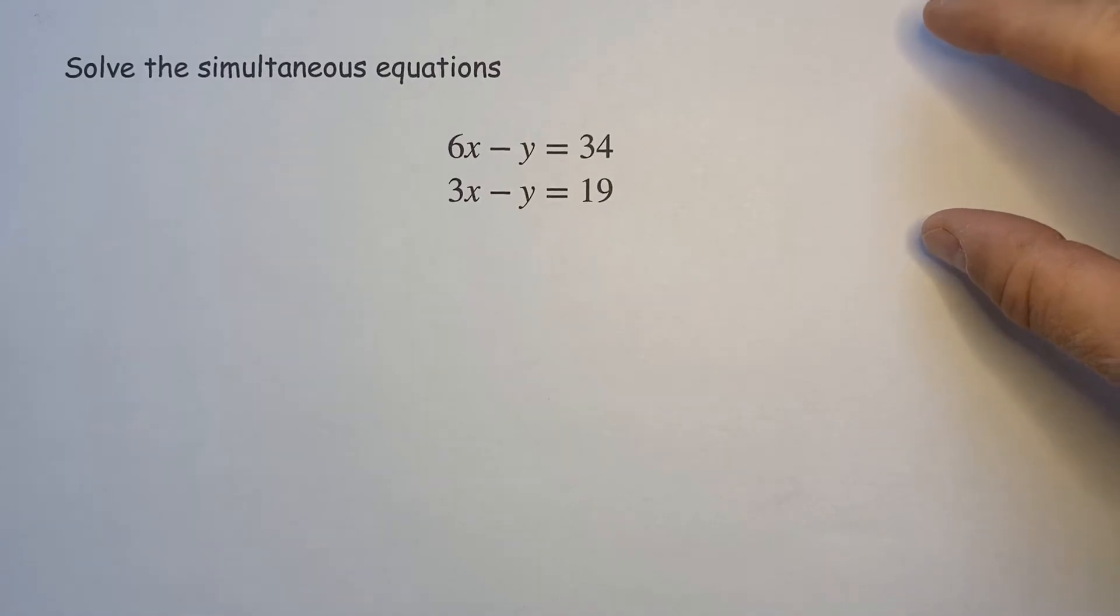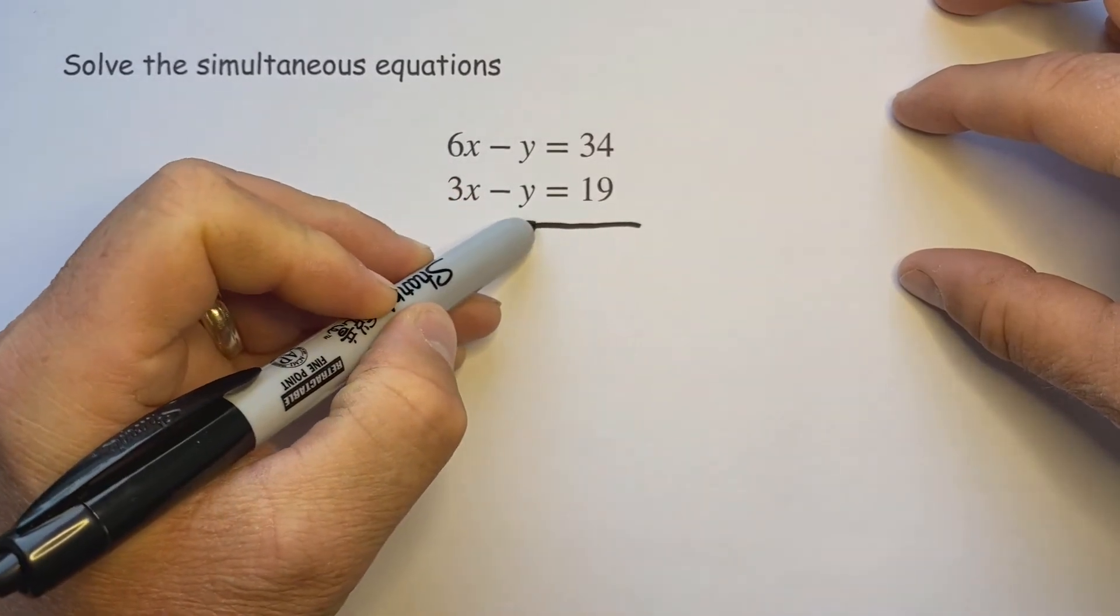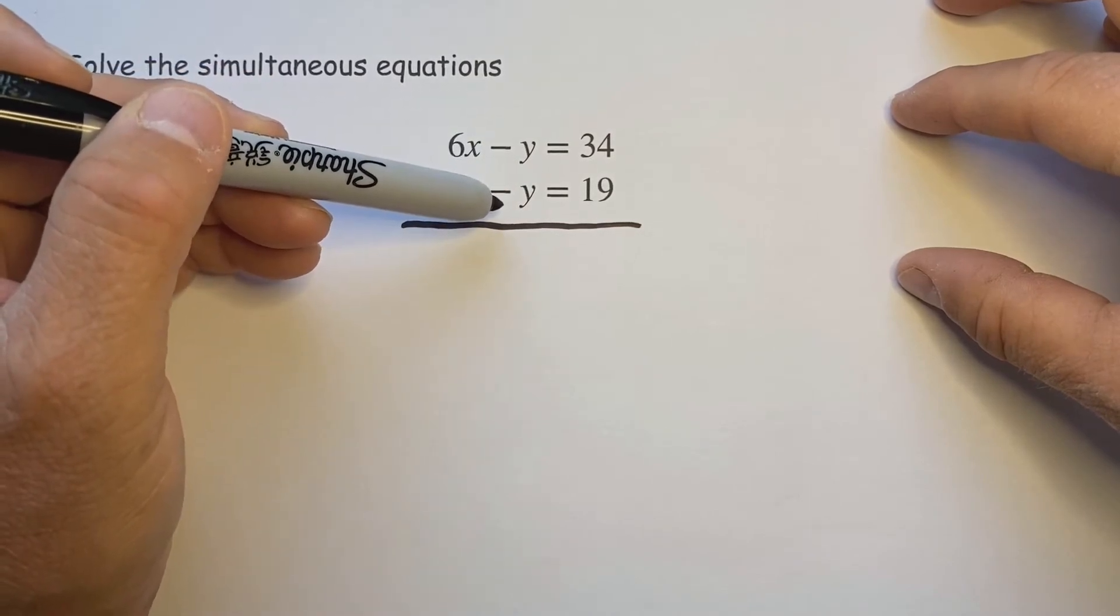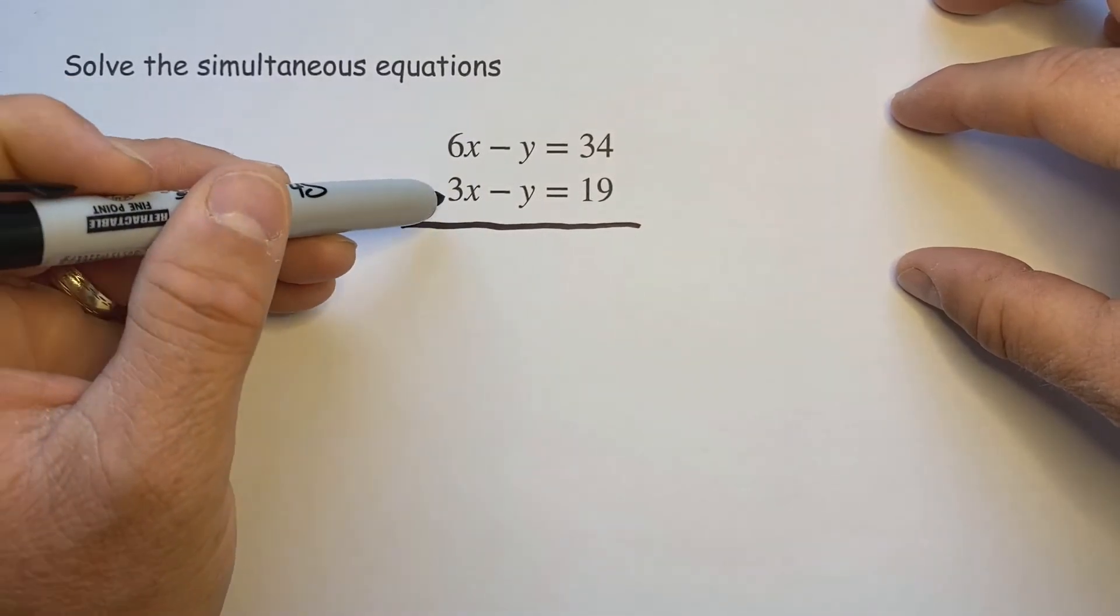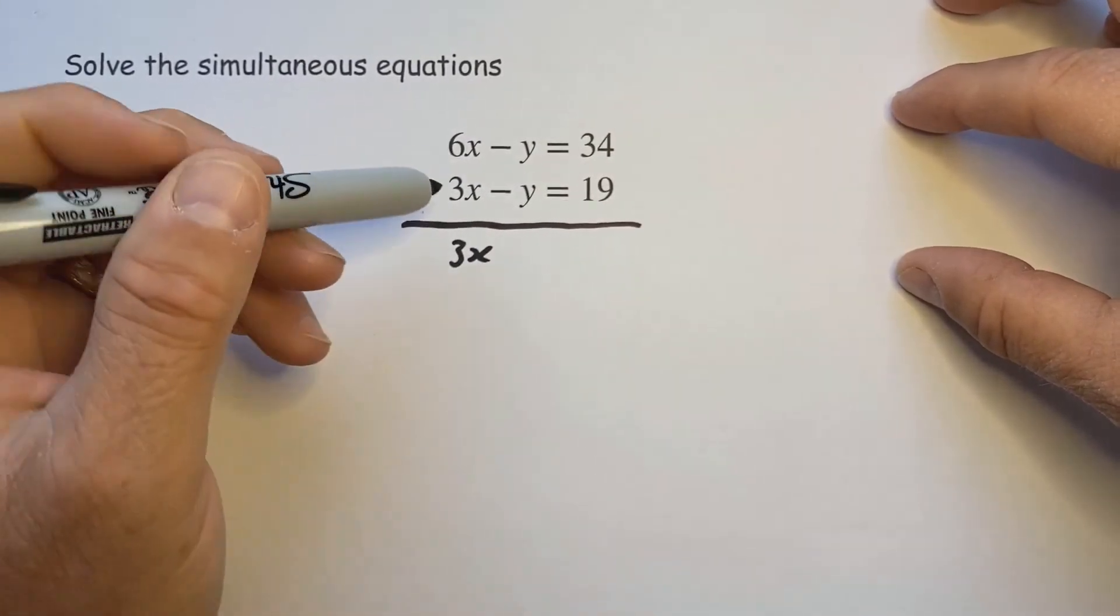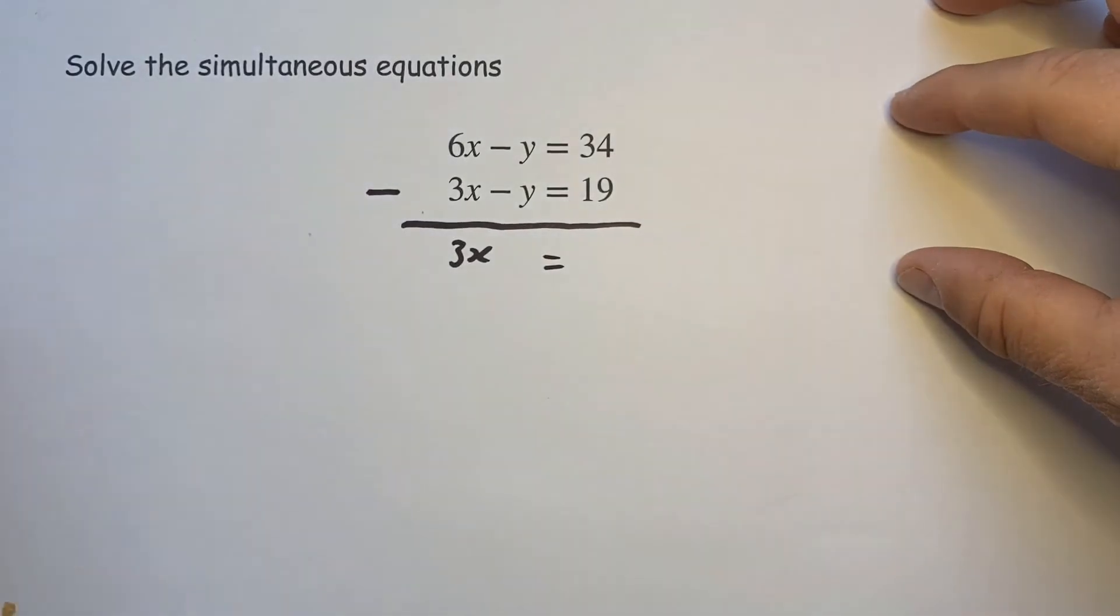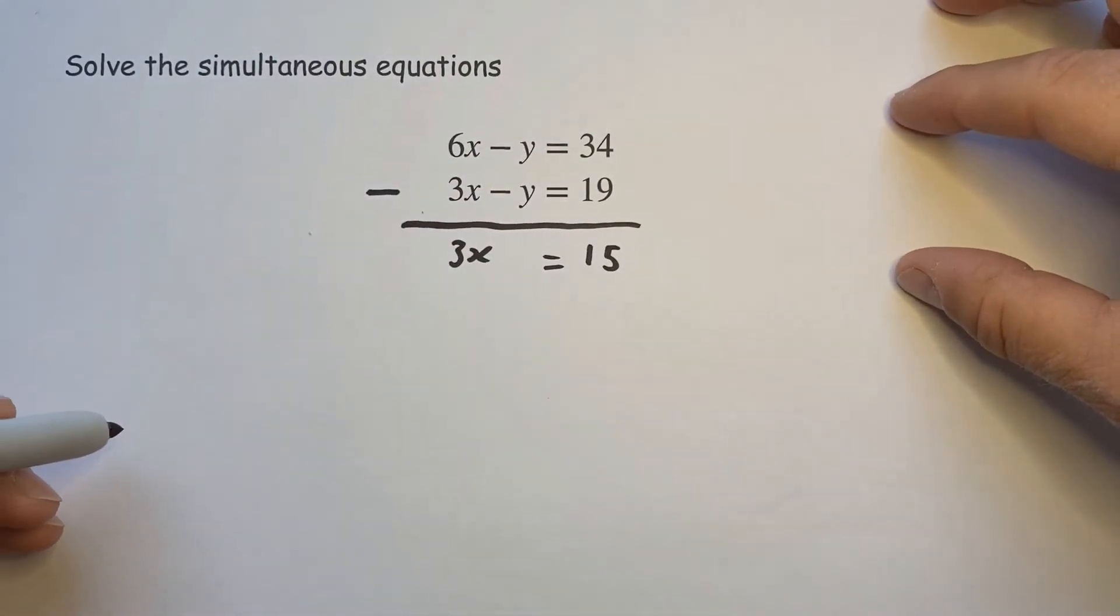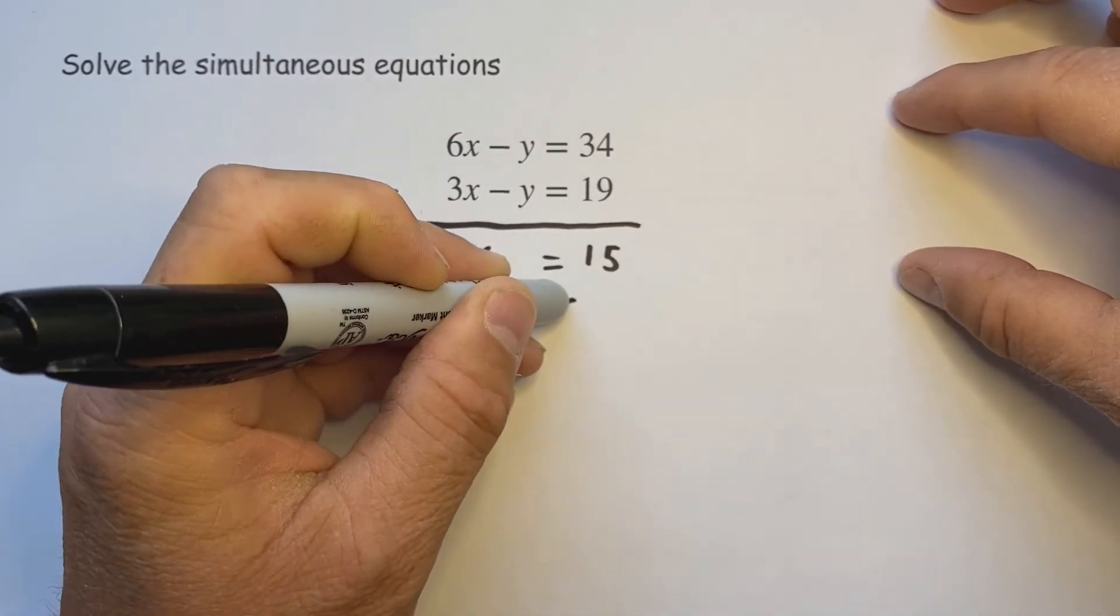Now this one looks a bit more challenging and minus signs always do cause issues. Again if I was to add these it would not help because minus y add a minus y is minus 2y. So we do have to subtract. 6x take 3x is 3x, minus y take a minus y is nothing, gone, equals 34 take 19 we have 15. So if 3x is equal to 15 then x is equal to 5.